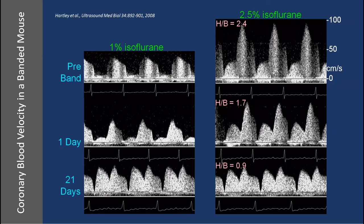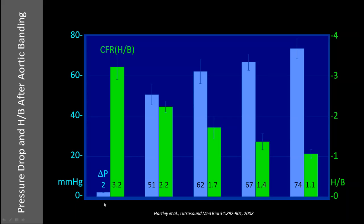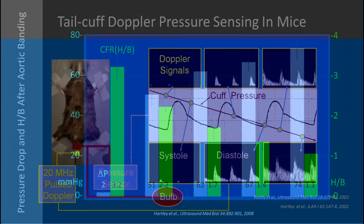We can use this to study various disease models of cardiac function. With TAC banding, as the pressure gradient across the stenosis increases, coronary flow reserve progressively drops by 21 days post-surgery, as cardiac work increases and the heart hypertrophies, remodels, becomes decompensated, and eventually fails.